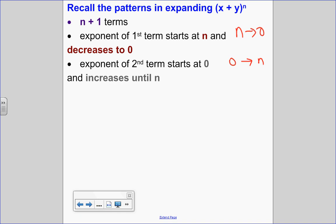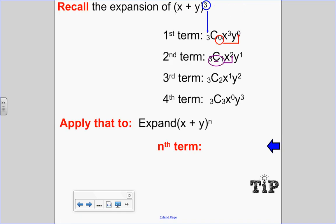Let's look at an example we did last time — the expansion of (x + y) cubed. For the coefficients, since the exponent on the outside is three, we start with three C's all the way down: 3C0, 3C1, 3C2, 3C3, starting at zero and building up to three.